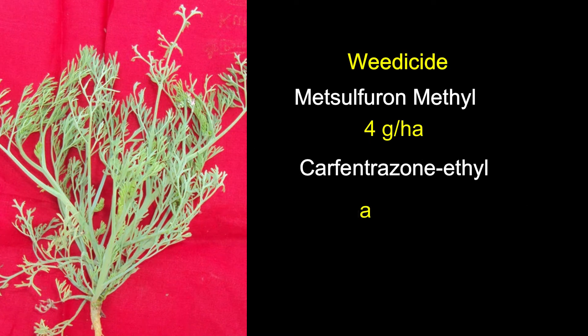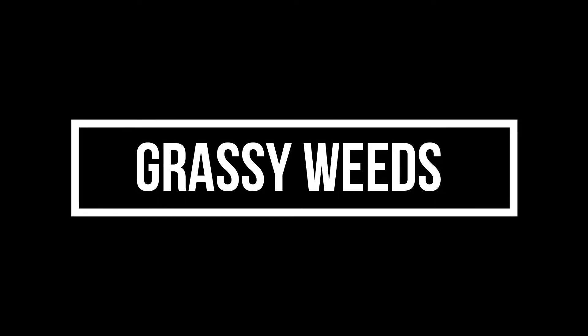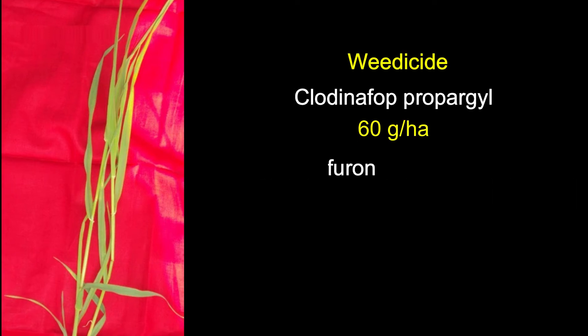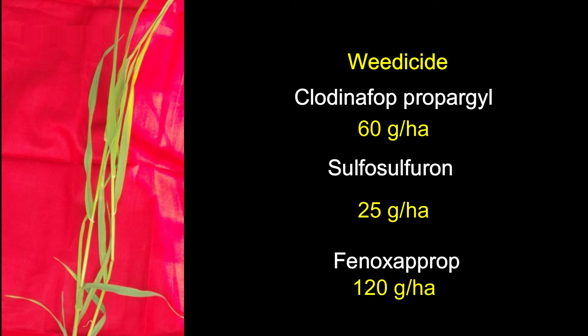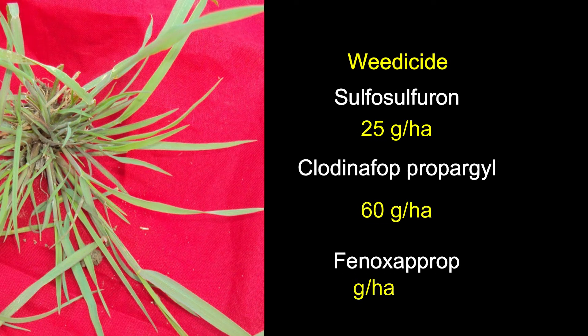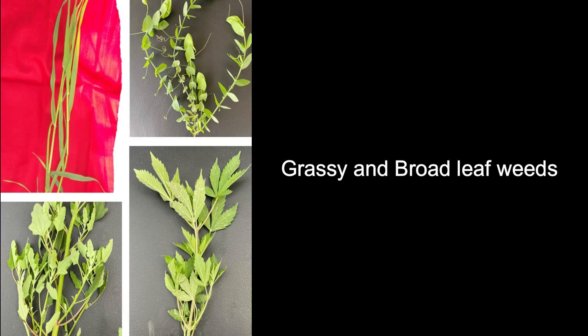Grassy weeds in wheat with recommended herbicides: Phalaris minor (Gulli danda/Baluri/Madhusi) - clodinafop-propargyl 60 g/ha, sulfosulfuron 25 g/ha, phenoxaprop 120 g/ha. Polypogon monspeliensis - sulfosulfuron 25 g/ha, clodinafop-propargyl 60 g/ha, phenoxaprop 120 g/ha.